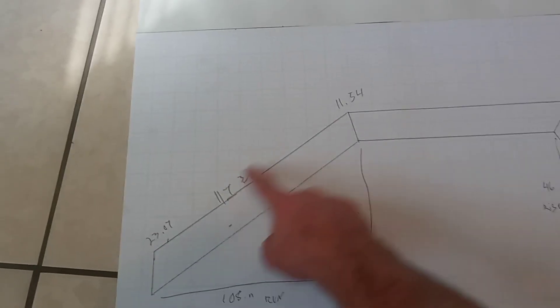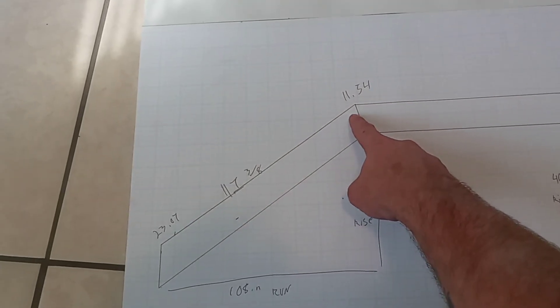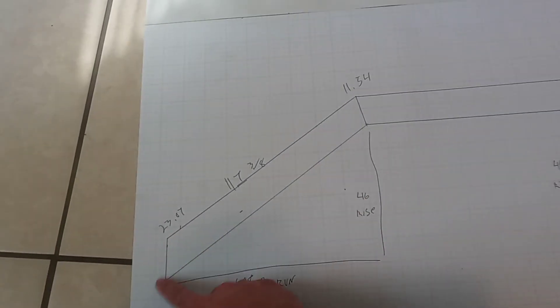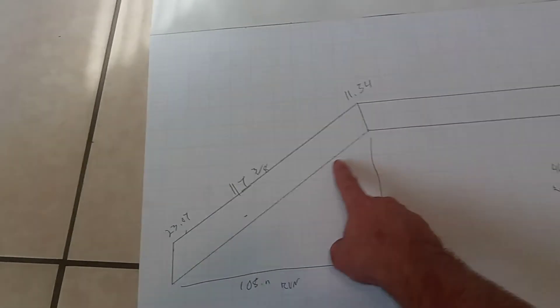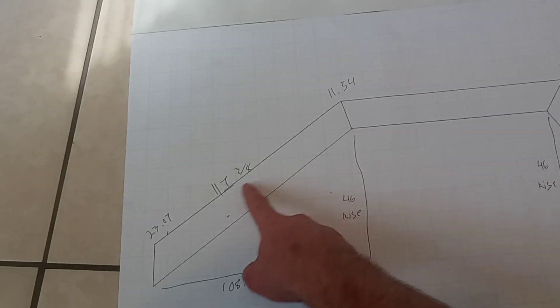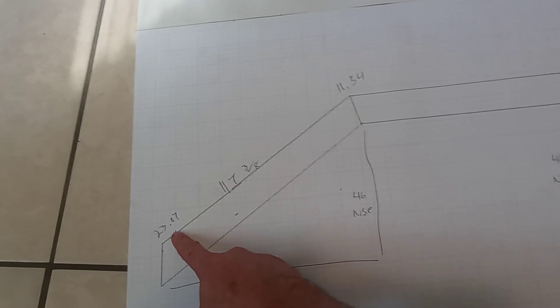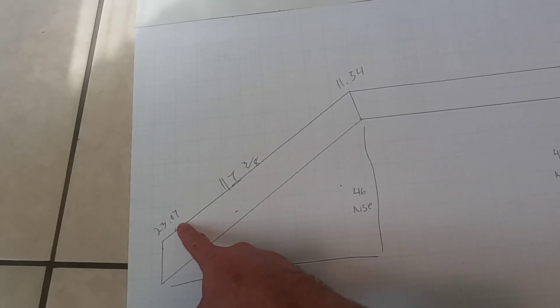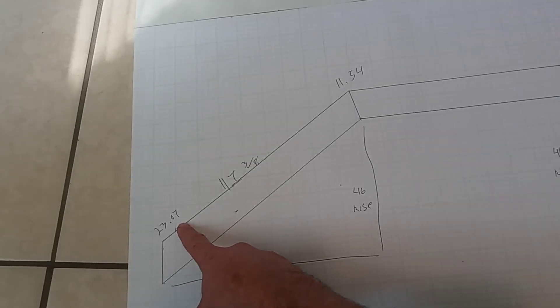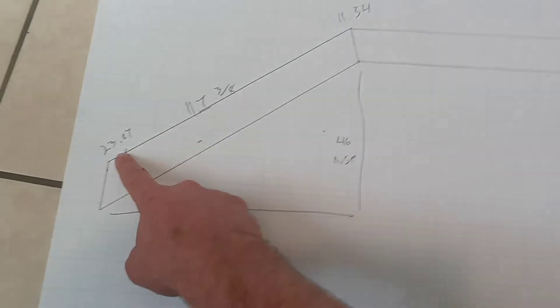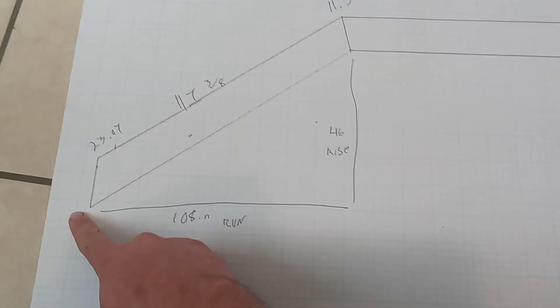That's from top to top, always. You always go from top to top. You never go bottom to bottom. So 117 inches and 3 eighths at 23 degrees. 23.07. So on your miter saw, you would turn it to 23 degrees. I would just round this down to 23 degrees and make this cut.